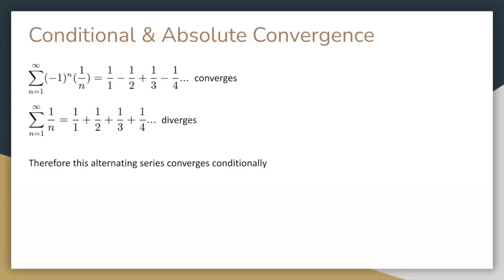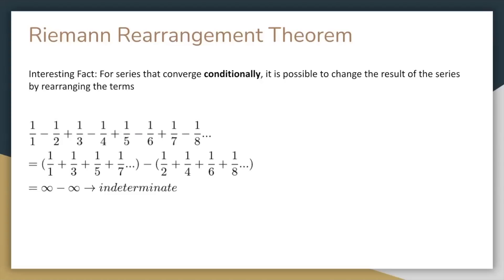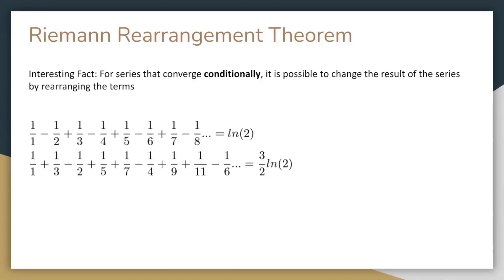We'll come back to the ratio test. For now, we'll talk about conditional and absolute convergence. We determined that the alternating series converges, but if we instead change all the terms to being positive, we get the harmonic series, which diverges. Since the alternating series converges but the series of the absolute values of the terms diverges, this alternating series is conditionally convergent. A fun fact called the Riemann rearrangement theorem is that for series that converge conditionally, it is possible to change the result of the series by rearranging the terms. The intuition is that if we group up all the positive terms and all the negative terms, we get infinity minus infinity, which is indeterminate. So our alternating series evaluates to ln of 2, but if we instead change the series to adding the first two positive terms, then subtracting the first negative term, then adding the next two positive terms, then subtracting the second negative term, and so on, this new series converges to 3 halves ln of 2.